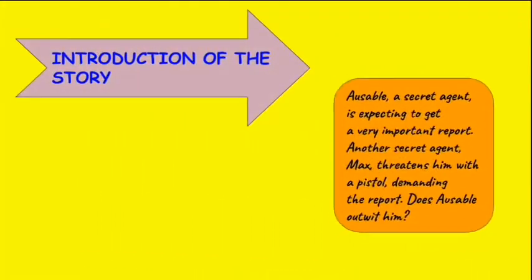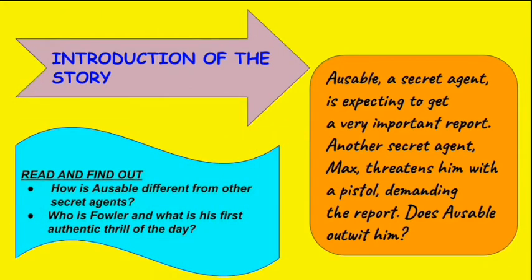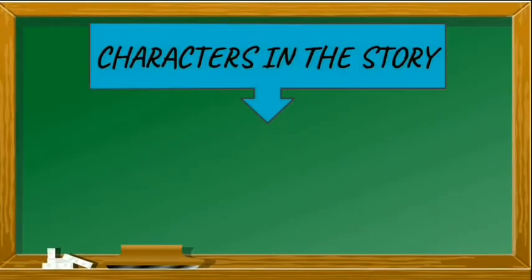Now let me give you the basic introduction of the story. Ozobal, a secret agent, is expecting to get a very important report. Another secret agent, Max, threatens him with a pistol, demanding the report. Does Ozobal outwit him? Let us read and find out how Ozobal is different from other secret agents, and who is Fowler and what is his first authentic thrill of the day. Now let me introduce you to the three characters in the story.